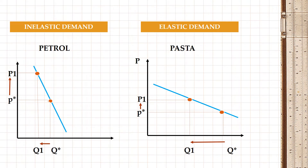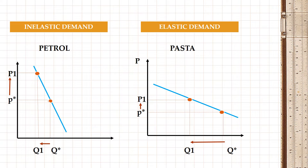You have two graphs in front of you. The first one covers the inelastic case and the other covers the elastic demand curve case. Demand is said to be inelastic if quantity demanded is not so sensitive to changes in price level — when price increases, quantity demanded decreases, but just a little bit. Here we are analyzing the market of petrol. There is a big increase in price of petrol, but a small change in quantity demanded.